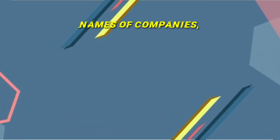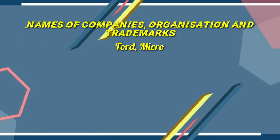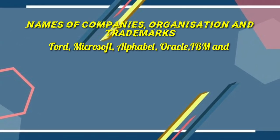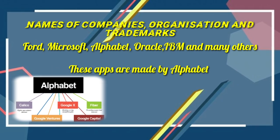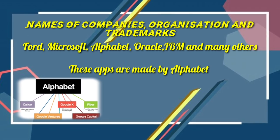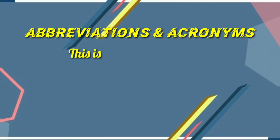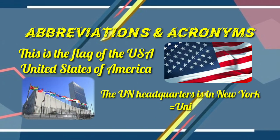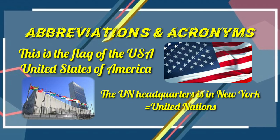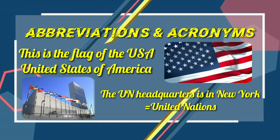Rule ten: names of companies, organizations, and trademarks. Some examples are Ford, Microsoft, Alphabet, Oracle, IBM, etc. Example: 'These apps are made by Alphabet.' Here, A is capital in Alphabet because this is the name of the company. Rule eleven: abbreviations and acronyms. For example, USA is an abbreviation of three letters representing three words — United States of America. Abbreviations are always written in capital letters.